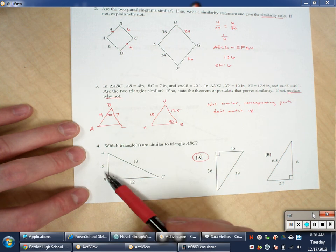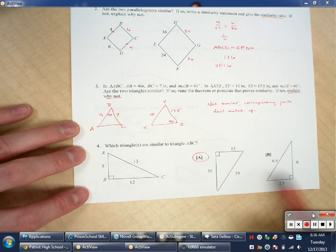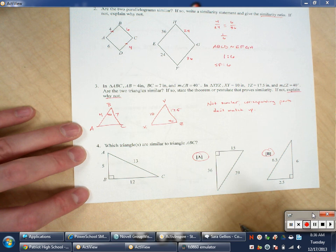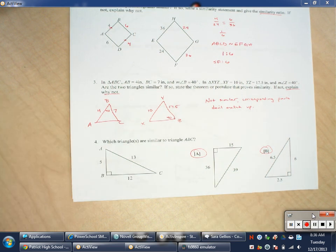Here, the small side is 2.5. Well, that's half of 5. 6 is half of 12, and 6.5 is half of 13. So that one is similar also. So in this case, they both are. Congratulations. You just did page 1.